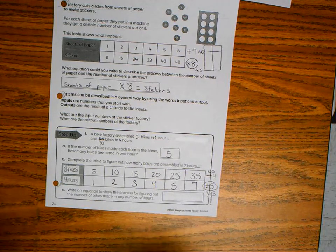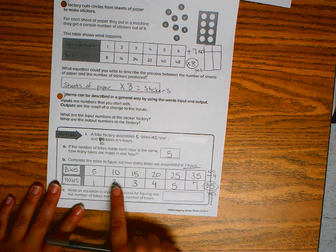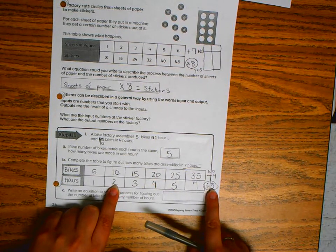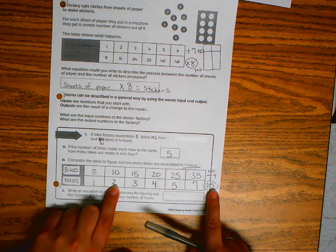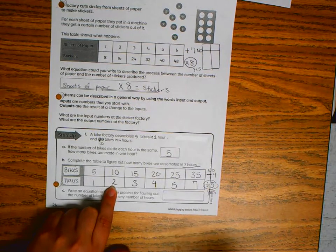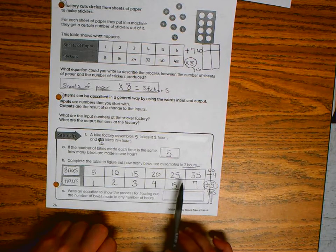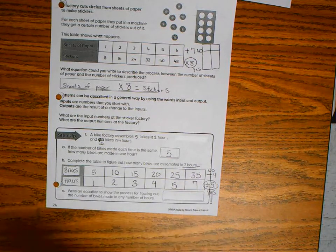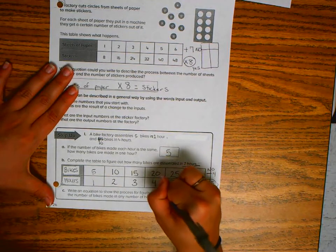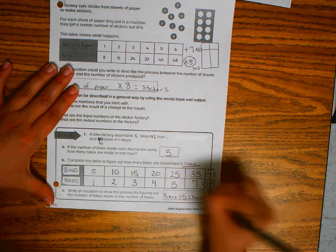You could have used the inverse. Inverse is the opposite operation. If my rule was to divide by five, I could use the inverse, the opposite, to find the input. The opposite of division is multiplication. So I could have said two times five is ten, three times five is fifteen, four times five is twenty, five times five is twenty-five, and seven times five is thirty-five. So my equation would be bikes divided by five gets you your hours.